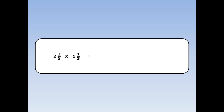2 and 3 fifths times 1 and 1 third. Here both of the numbers are mixed numbers so I must turn them both into top heavy fractions. 2 and 3 fifths is the same as 13 fifths. 1 and 1 third is the same as 4 thirds.